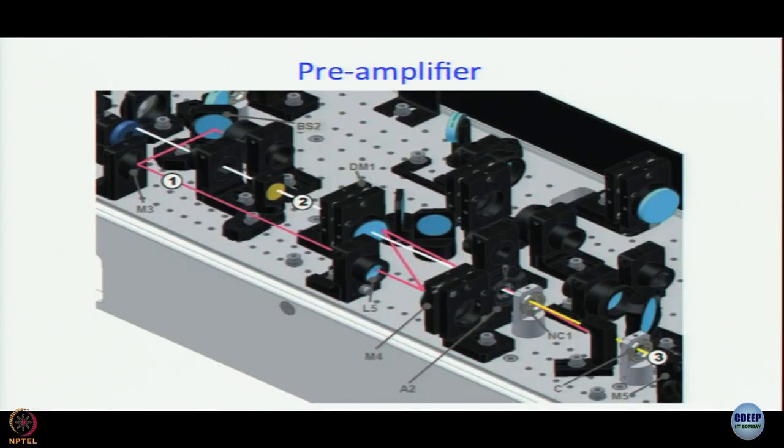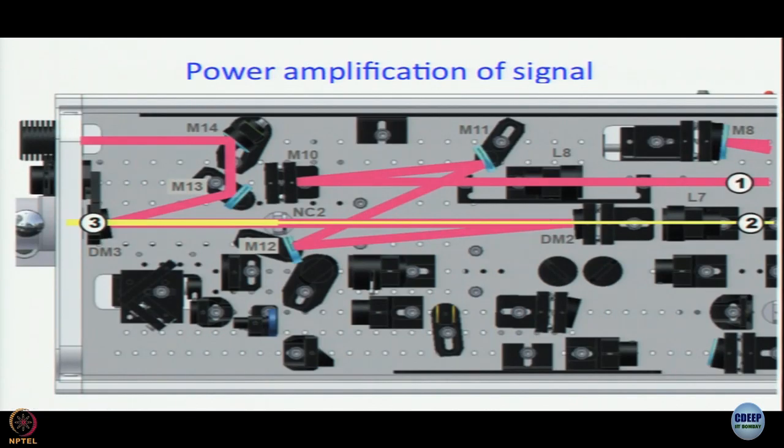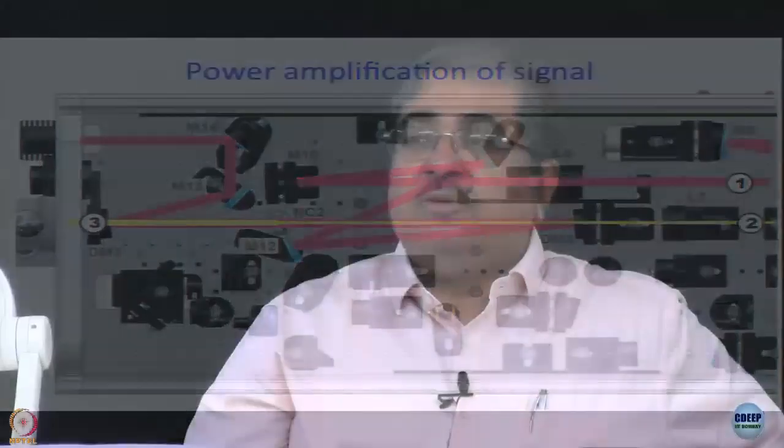Moving on, this is the isometric view of preamplifier. Once again if you have seen topaz you will be able to compare the optics and know which is which. This is how you see collimation of the signal beam L6 L7, and this is how power amplification of the signal takes place. So the reason why I am even showing these pictures is that please go back and have a look and identify the optics. Then only we will understand what is going on inside. That brings us to the end of this three module long discussion on topaz. Hopefully we all have a working knowledge of the instrument now.